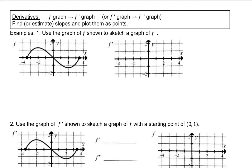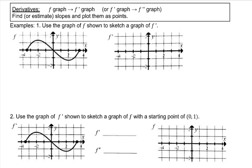Use the graph of f shown to sketch the graph of f prime. To graph f prime, we're looking at the slopes of f. First, I'm going to determine if there are any places on f where the slope is 0 — at negative 2 and 2. So that is where f prime will have intercepts. At x equals 0, it looks to be negative 1, so at 0 we'll plot a point at negative 1. We also have a pretty steep slope at this endpoint — that looks slightly above 1. So at about negative 3.5, our slope was a little more than positive 1.